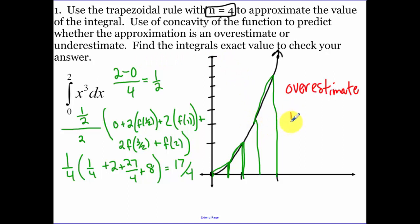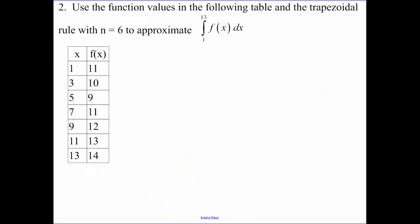Now that we know it's an overestimate, they ask us to find, use the integrals to find the exact value. So the integral would be 1/4 x to the fourth, evaluated from 0 to 2. When I plug in 2, I get 1/4 times 2 to the fourth, minus 1/4 times 0 to the fourth. This is going to simplify to be 4. So the actual area under our curve is 4. Using our trapezoids, we estimated it to be 17/4. This was an overestimation of the actual area.